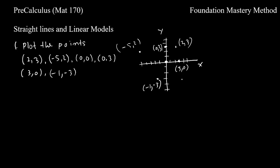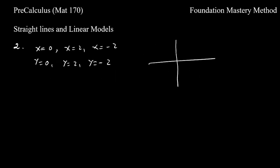This point (-5,2) is in the second quadrant, (-1,-3) is in the third quadrant, and (3,0) is on the x-axis. We do not have any point in the fourth quadrant, but if you add another point, say x=2 and y=-4, then you get the point (2,-4), which lies in the fourth quadrant.